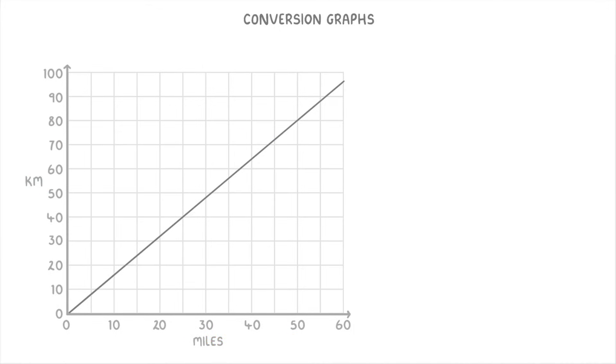Now sometimes you might be asked to work out a value that isn't on your graph. For example, how many kilometers are there in 500 miles? 500 miles is way off our graph because we only go up to 60 miles. So to do this, we're going to have to work out the conversion for a smaller number of miles first and then scale it up.